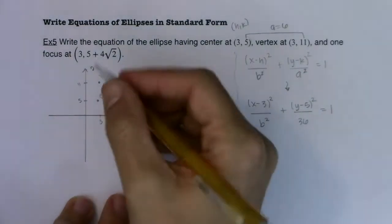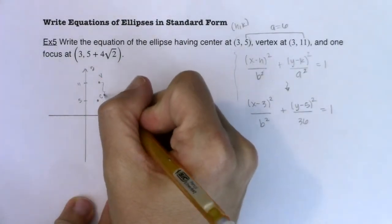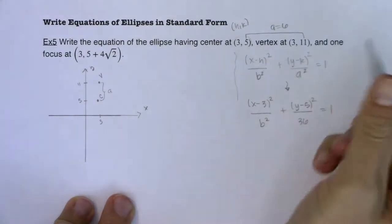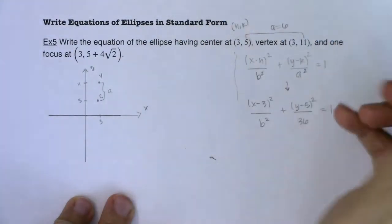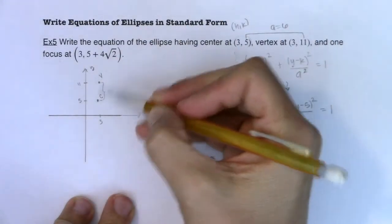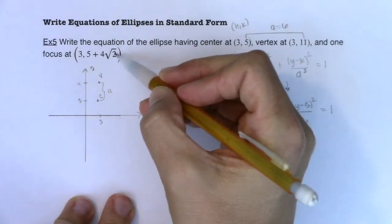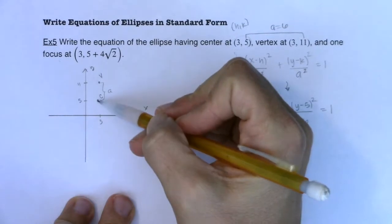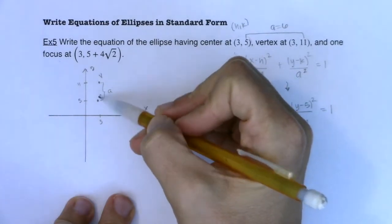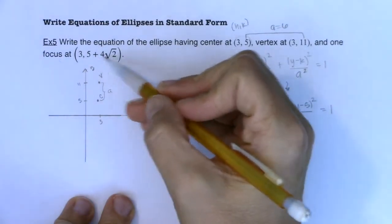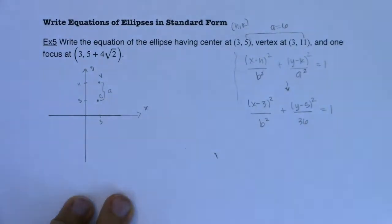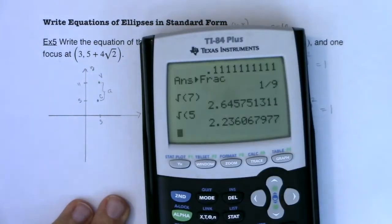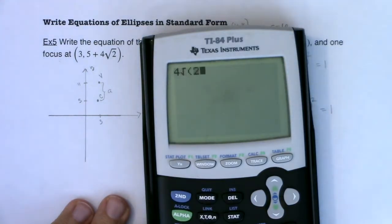So I'm a good chunk of the way through this problem. I figured out the center and I figured out a. So we know that the distance from the center to the vertex is a. The other piece of information I haven't used yet is this focus. So (3, 5 + 4√2). Well, here's (3, 5), and if I want to add 4√2 to that y coordinate, let's get a decimal approximation for what 4√2 is equal to, and it looks like it's at about 5.7.